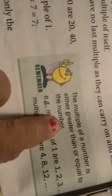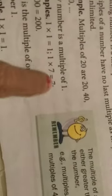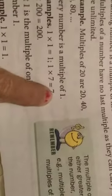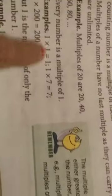Example: 1 times 1 is equal to 1. So, the multiple of a number is either greater than or equal to the number.